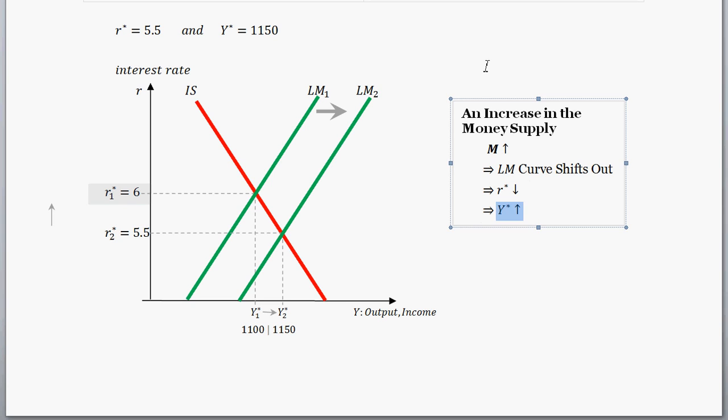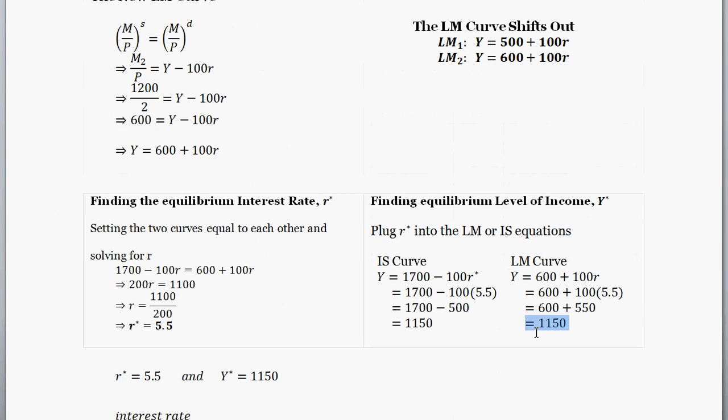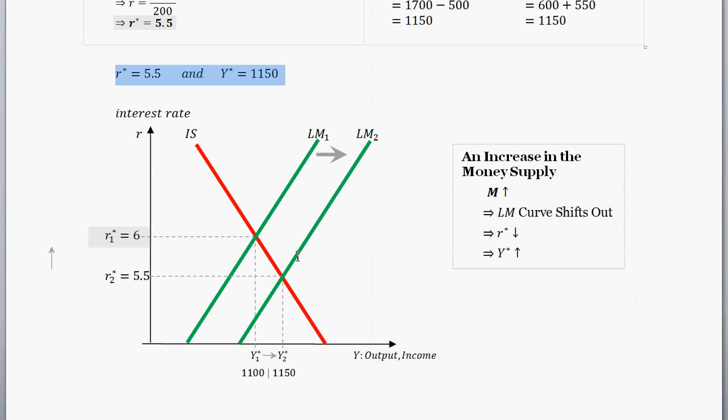So once again, we have a lot of different ways to think about this. We were given the shock, and we went through our equations to find out the effect. We just plugged that new change in our equations, and we found the new equilibrium levels of interest and output.